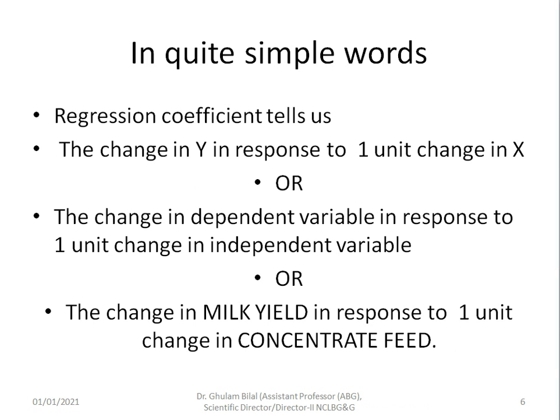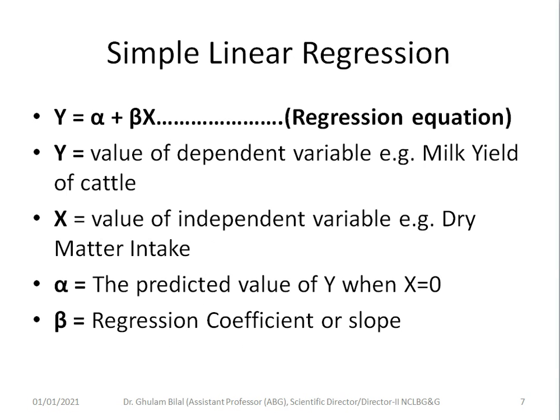In simple words, the regression coefficient tells us the change in y in response to one unit change in x — that is, the change in the dependent variable in response to one unit change in the independent variable, such as the change in milk yield in response to one unit change in dry matter intake. The simple linear regression equation is: y equals alpha plus beta times x.